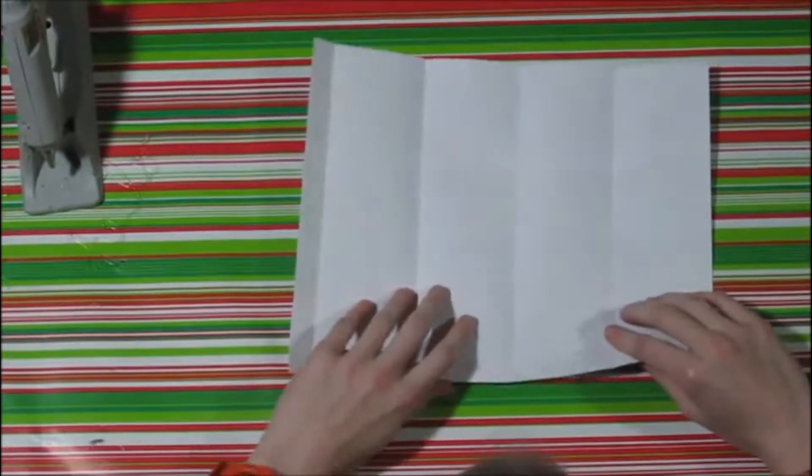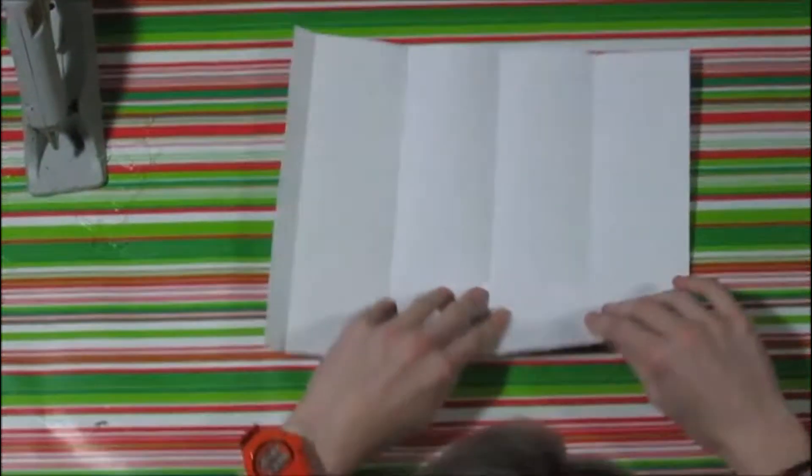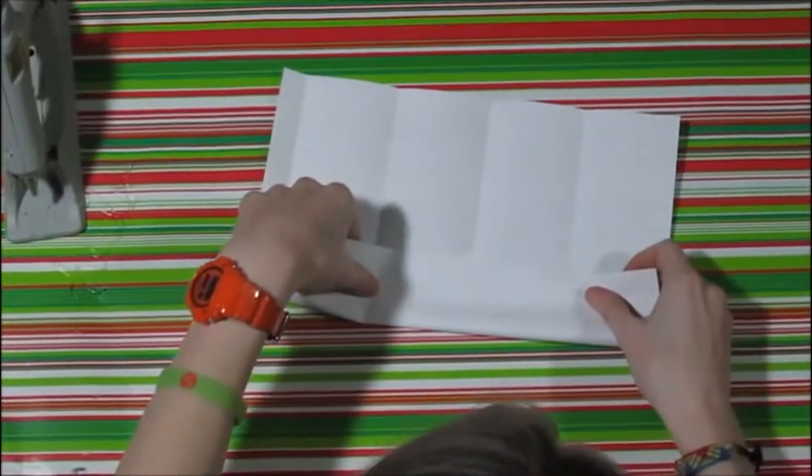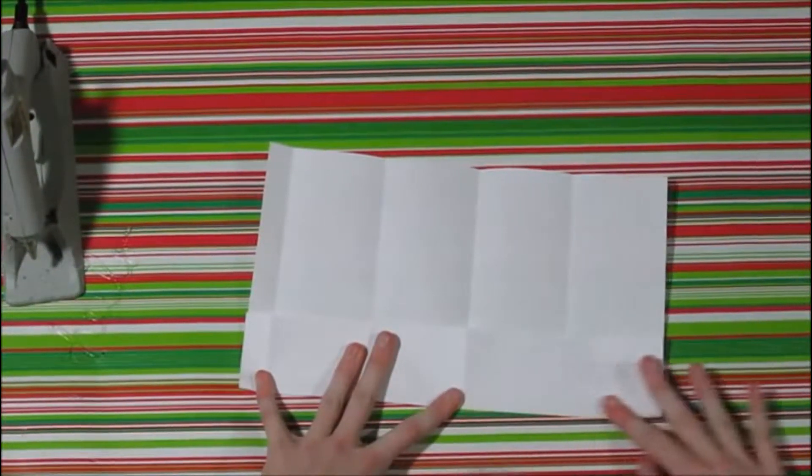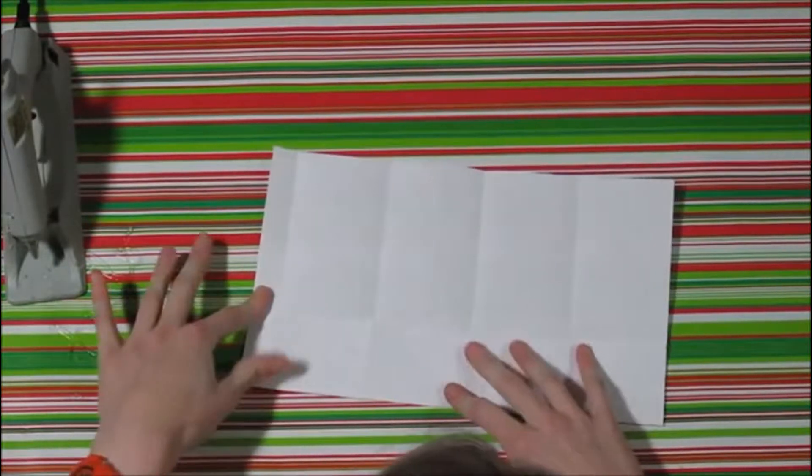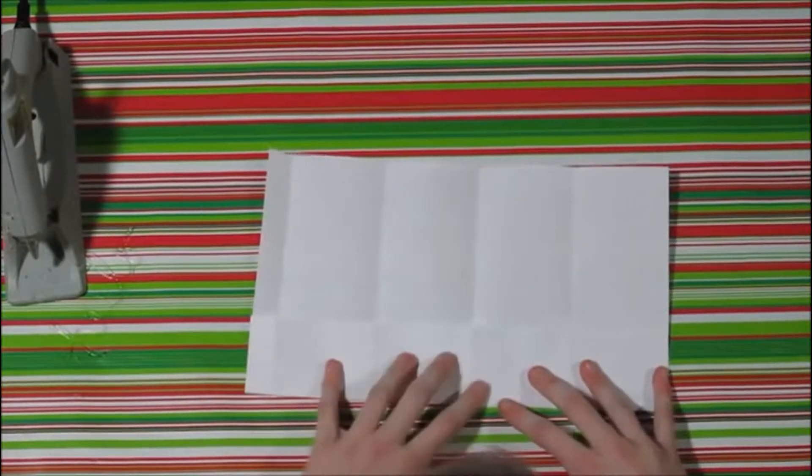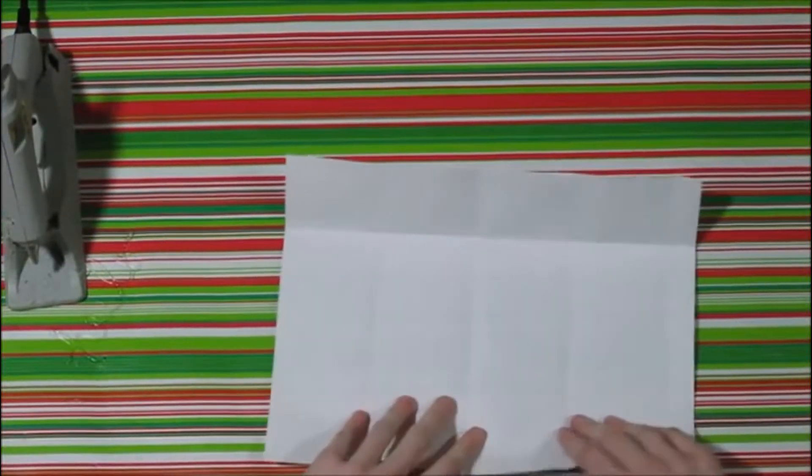Then you're going to take the side, and you're going to bring it up, like this, about three centimeters, or something like that. Make sure that the folds from the part that you folded line with the other folds. Then you're going to fold, and you're going to do the same thing on the other side.